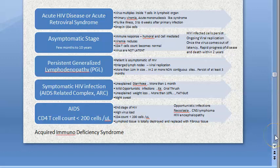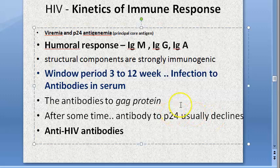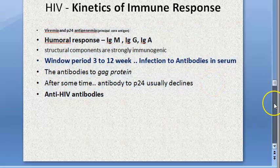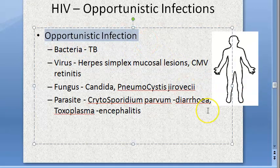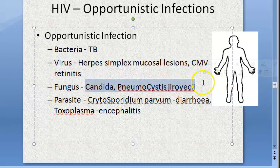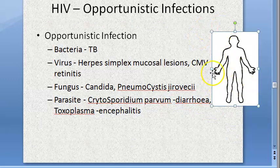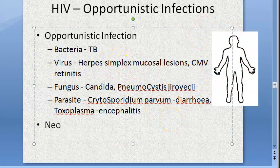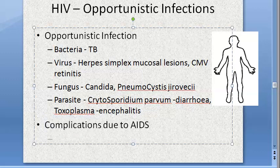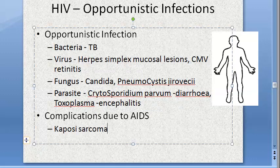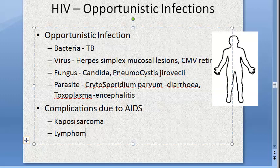The person doesn't actually die because of the virus; he dies because of opportunistic infections. The opportunistic infections include bacteria like tuberculosis; viruses like herpes simplex mucosal lesions and cytomegalovirus retinitis; fungi like Candida and Pneumocystis; parasites like Cryptosporidium parvum causing diarrhea and Toxoplasma encephalitis. There can also be neoplasms like Kaposi sarcoma.